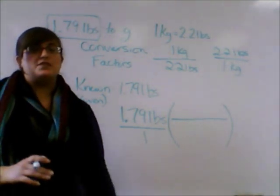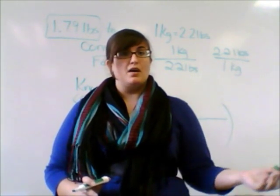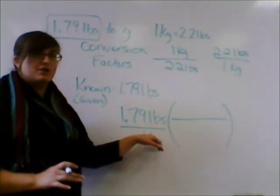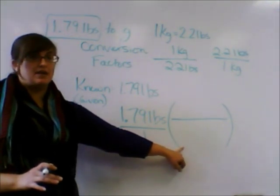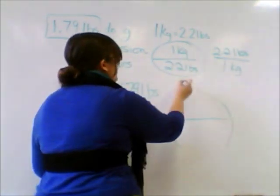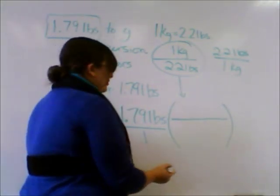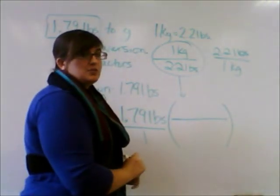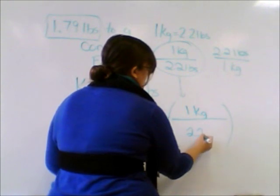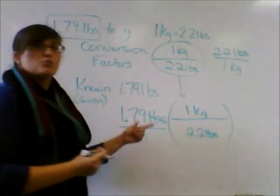Whatever is on the top gets canceled out by what we put on the bottom. Our pounds are on the top, so we want pounds on the bottom of the conversion factor — which means we use one kilogram over 2.2 lbs. So our pounds cancel, but we're still left with kilograms. We still have to convert to grams.